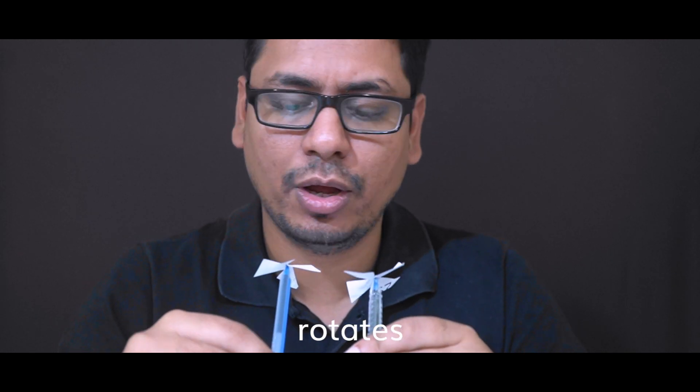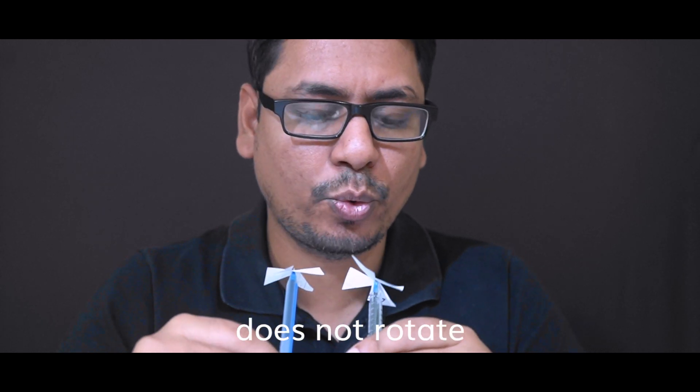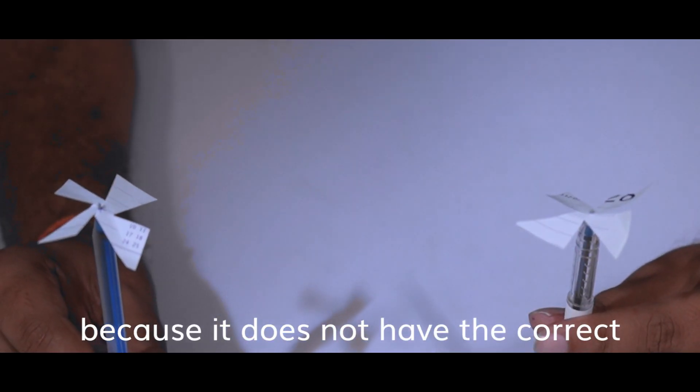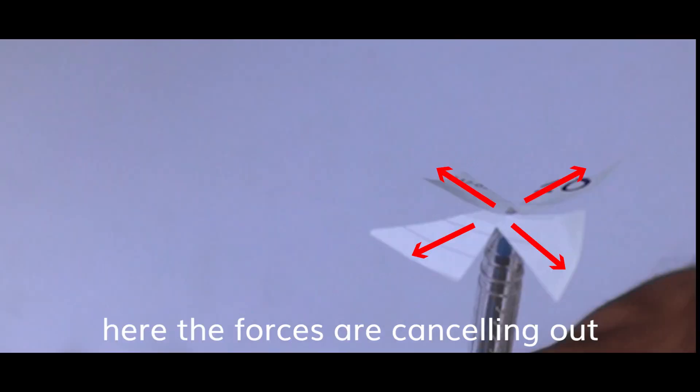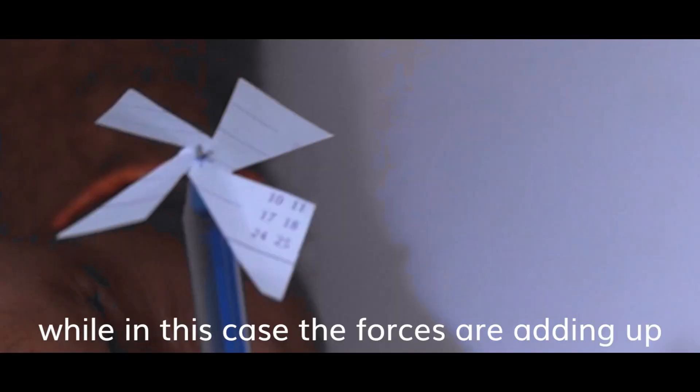The paper fan in my right hand rotates, while the paper fan in my left hand does not rotate because it does not have the correct tilting of the blades. Here the forces are canceling out, while in this case the forces are adding up.